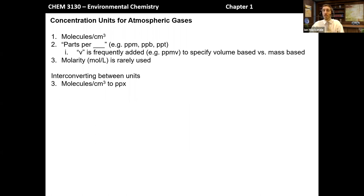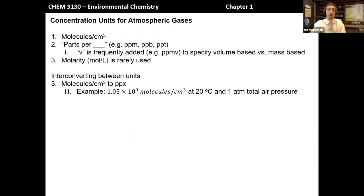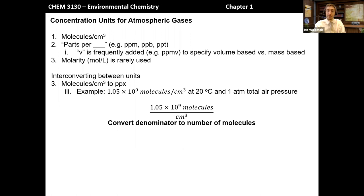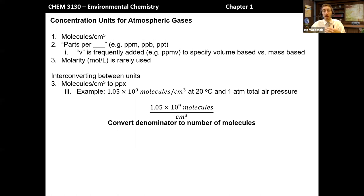Sometimes molarity values can be extremely small — 10 to the minus 9th or less — so that's why we don't commonly use molarity as an atmospheric concentration unit. Let's do one more example: going back from molecules per cubic centimeter to the PPM scale — basically the reverse of what we did at the beginning. Taking 1.05 times 10 to the 9th molecules per cubic centimeter at 20 degrees Celsius and one atmosphere total pressure. We still need to convert the denominator to number of molecules. I want to do this example because the reverse conversion has one slight catch near the end worth discussing.